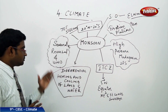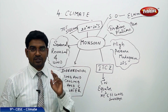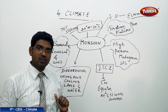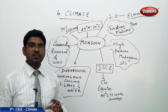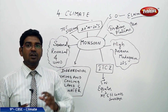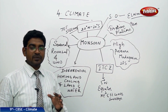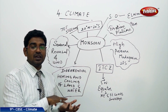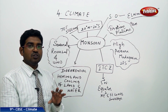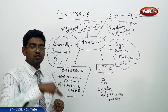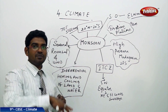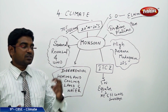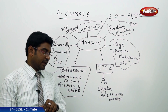Now let us see the factors that cause monsoon rains. The first factor is the reversal of the winds. The second is the differences in the heating and cooling of land and water. When land is heated to very high temperatures and water has a pressure difference, the low pressure area over land draws air from the water body where there is high pressure. Air moves from high pressure to low pressure, bringing water vapor and resulting in monsoon rains.